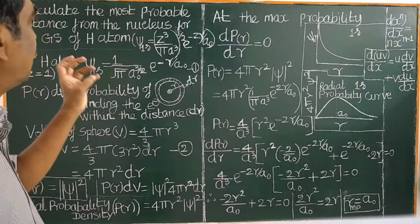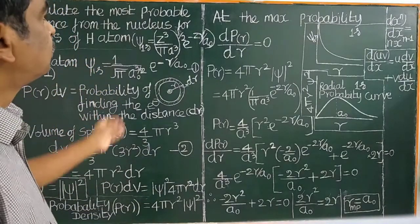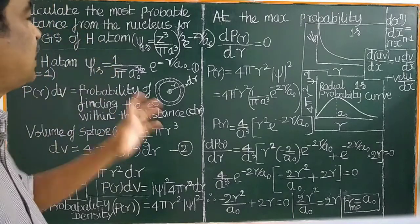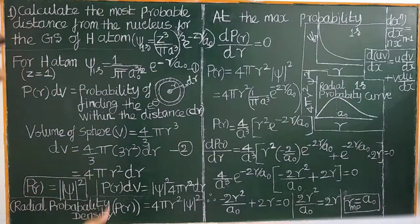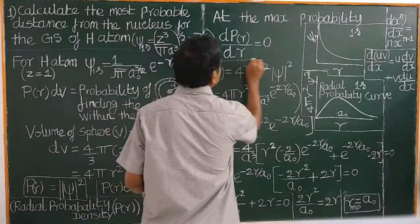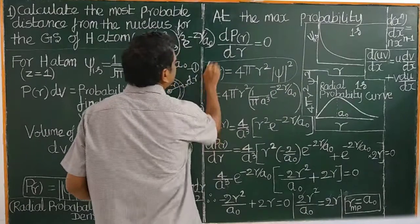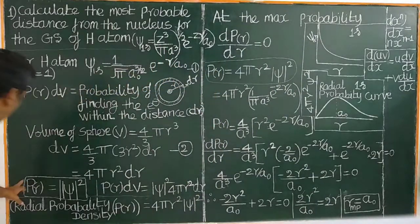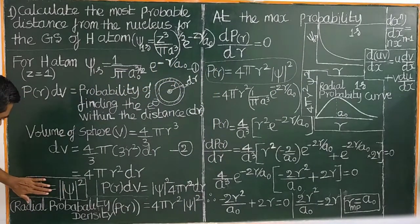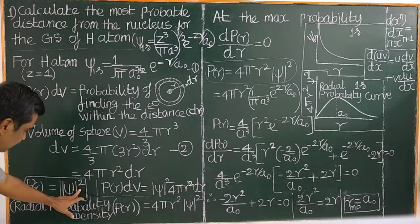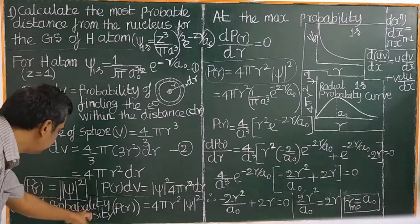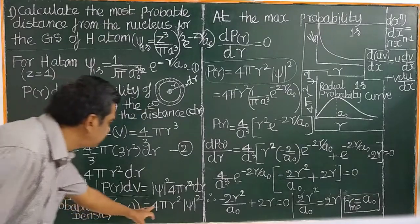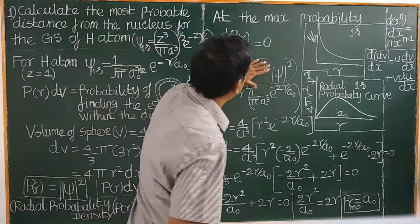Let us study today one problem often asked in CSIR: how to derive the radial probability function. This is called a radial probability function. We have already studied the probability function. This is the simple probability density function, and this is the radial probability distribution function — 4πr².